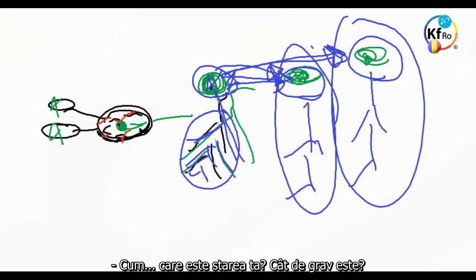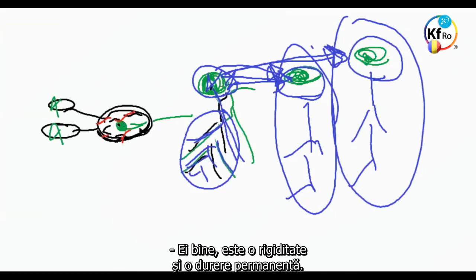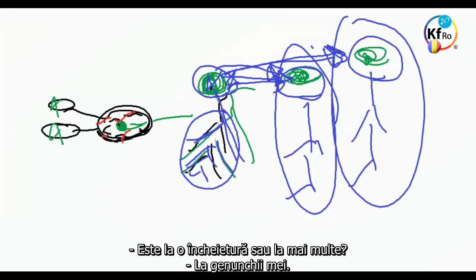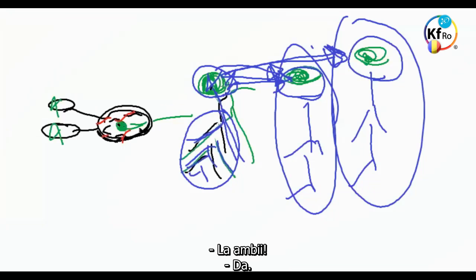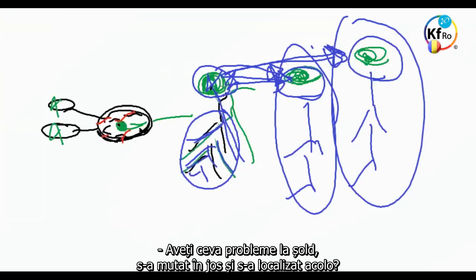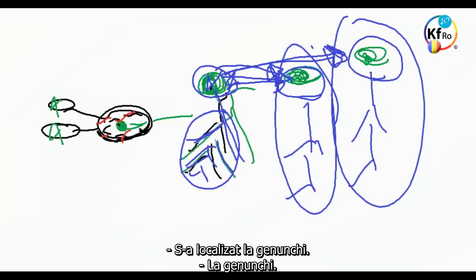And what is your condition, how deep is that? Well, it's a stiffness and an achiness. Just in one joint or many joints? In my knees. Both of them? Yes. More so in the right leg than the left leg. Do you have any problem with the hip? Has it moved up or is it just localized in those two? Just localized in the knees.